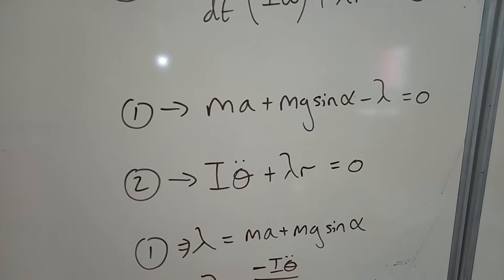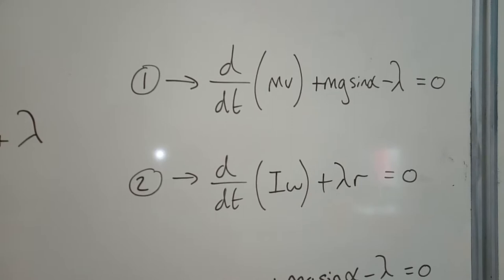What have I done here? I've done D by DT of MV, D by DT of I omega. Well, M is constant, so DV by DT is just A, which is what we want.